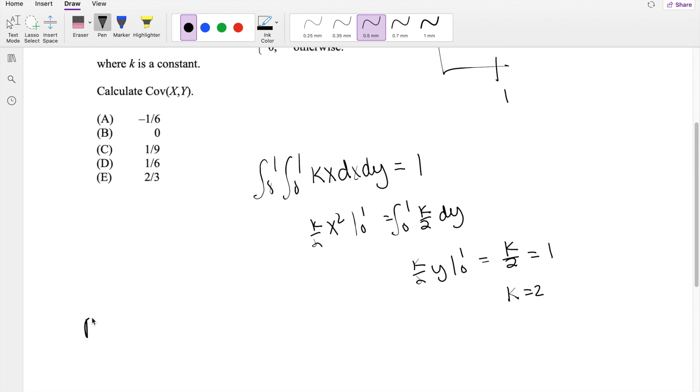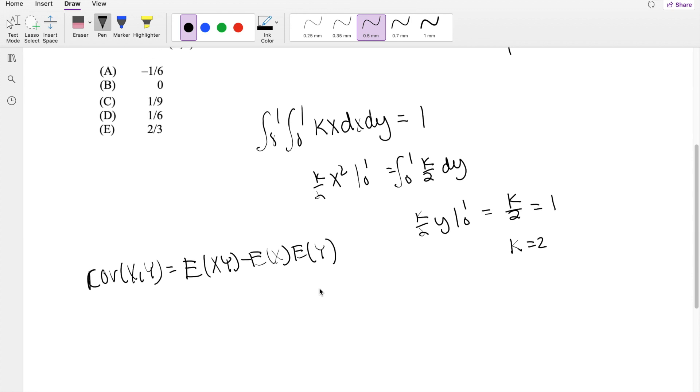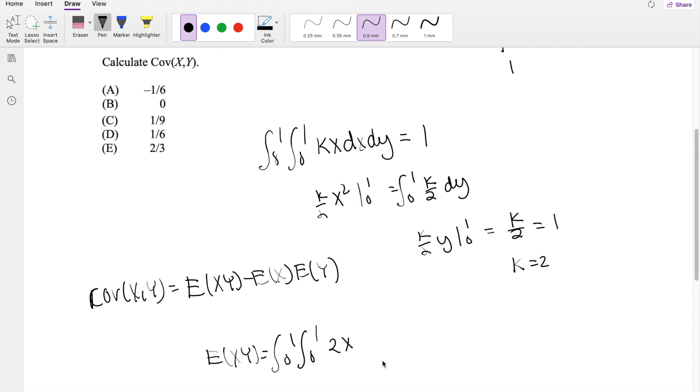Then in this question, they ask you to find the covariance of x and y. So if you don't have this memorized, I definitely recommend you should. This is equal to the expectation of xy minus the expectation of x times the expectation of y. So then expectation of xy, this is equal to integrated from the same range 0 to 1, 0 to 1, k is equal to 2, x, that's our function now, dx dy.